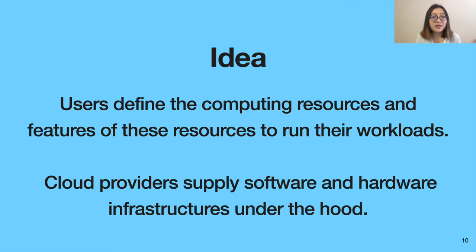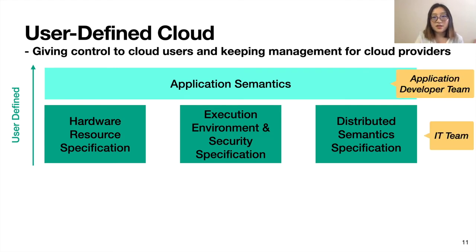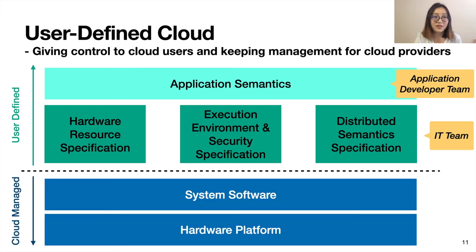Our idea, based on this observation, is to let users define the computing resources and features of these resources for their own workloads. And to avoid adding IT burdens to users, we want cloud providers to continue supplying software and hardware infrastructures under the hood. With these ideas, we propose user-defined cloud. Specifically, users can define their own application semantics, specify different types of hardware resource, execution environments, security features, and distributed semantics. The usage model envisions two teams: a developer team responsible for developing applications, and an IT team that looks at the application and comes up with a set of specifications. Under the hood, the provider still manages and provides software and hardware infrastructures.